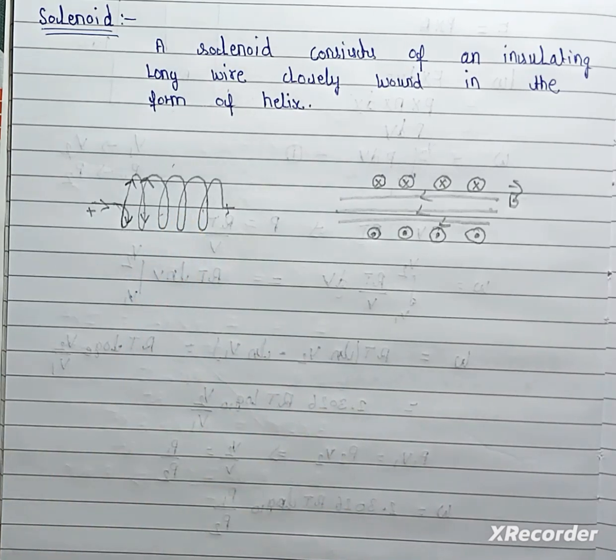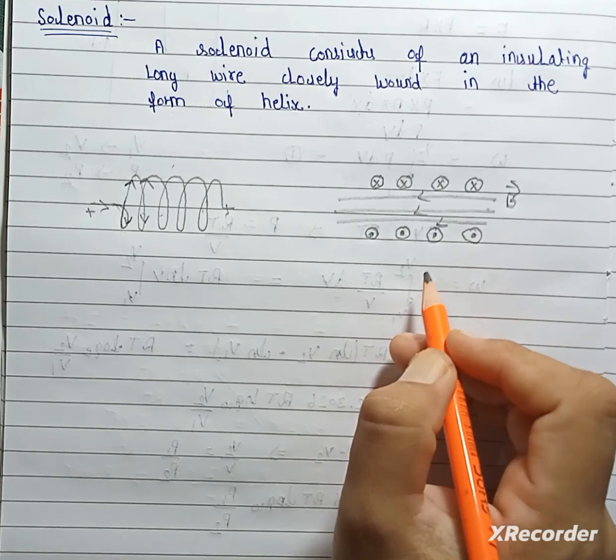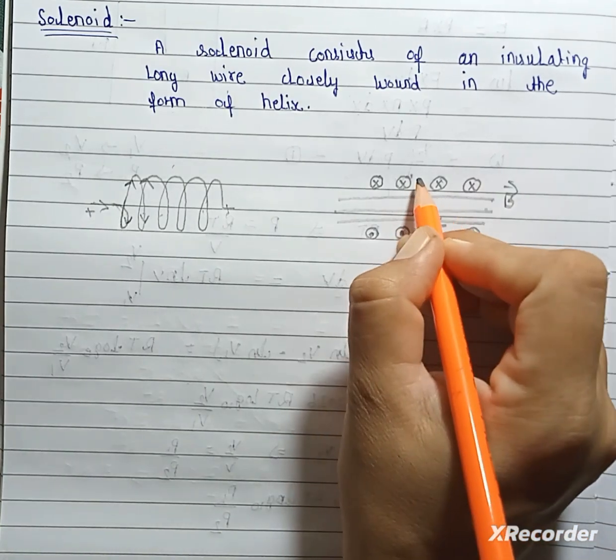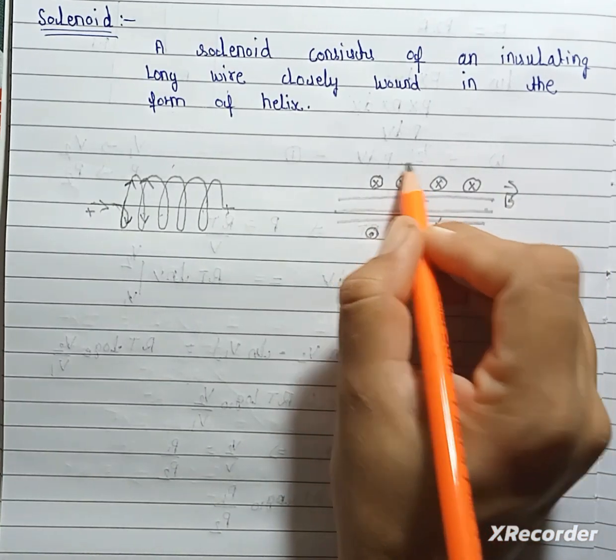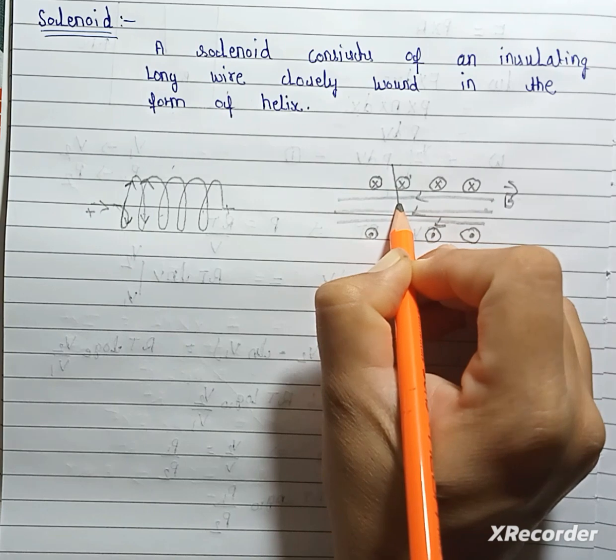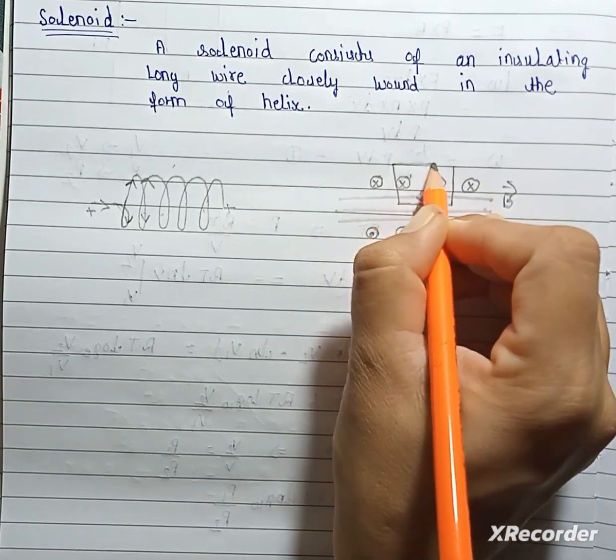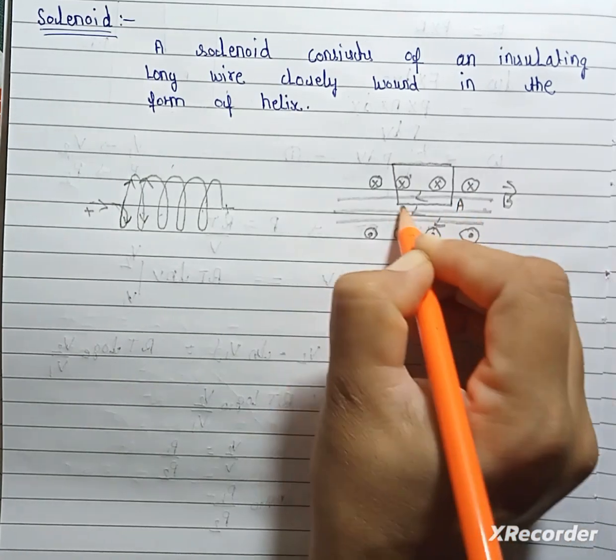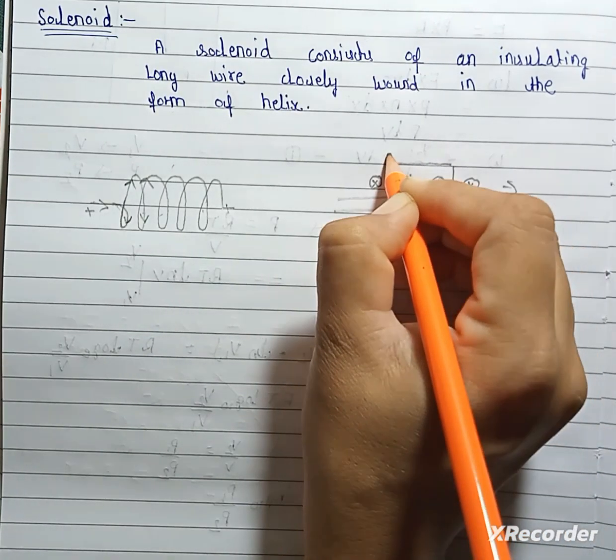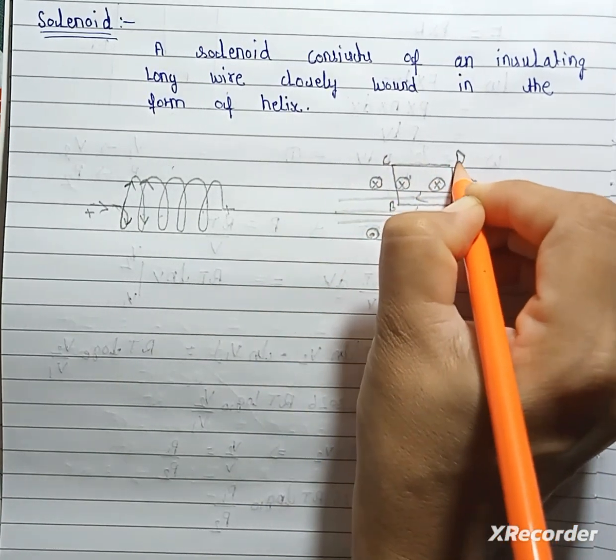Now, consider for calculating magnetic field, an ampere loop. This is an ampere loop: A, B, C and D.